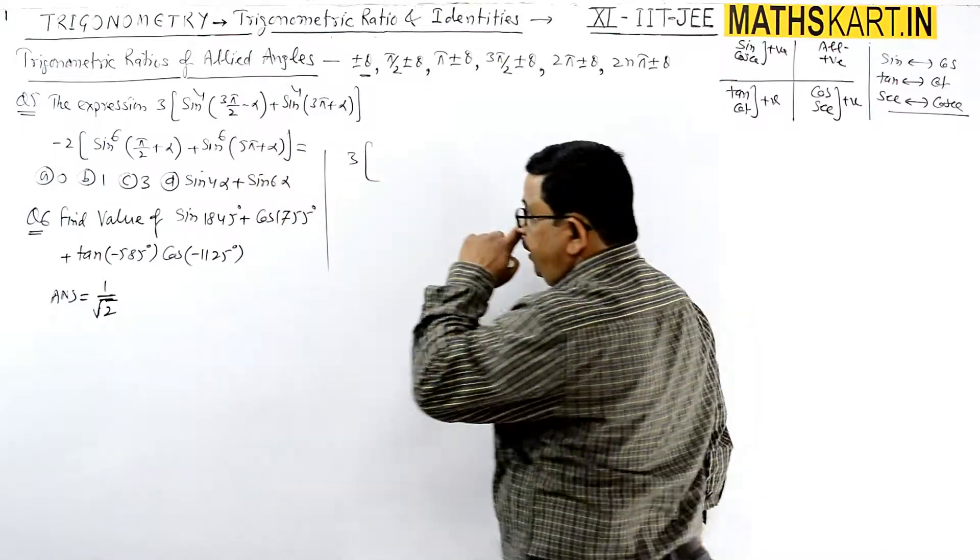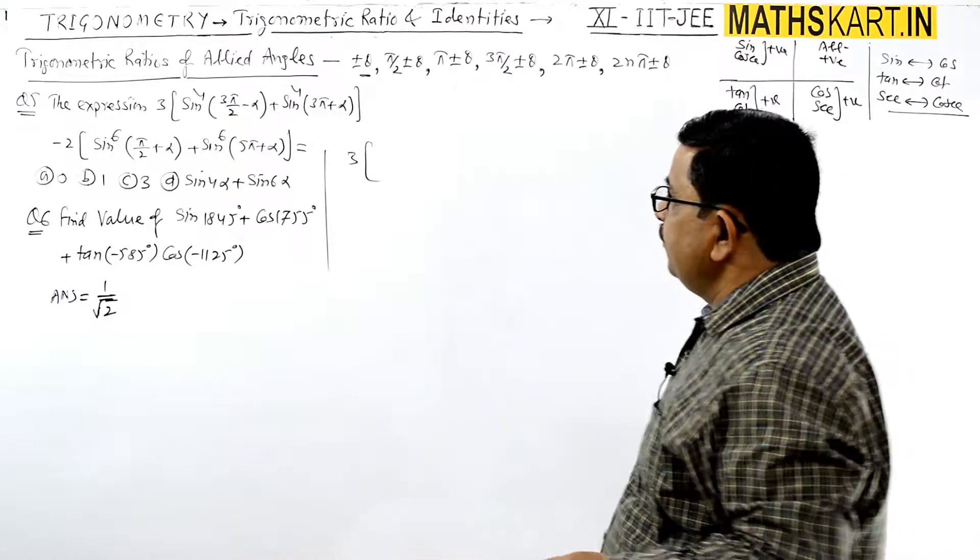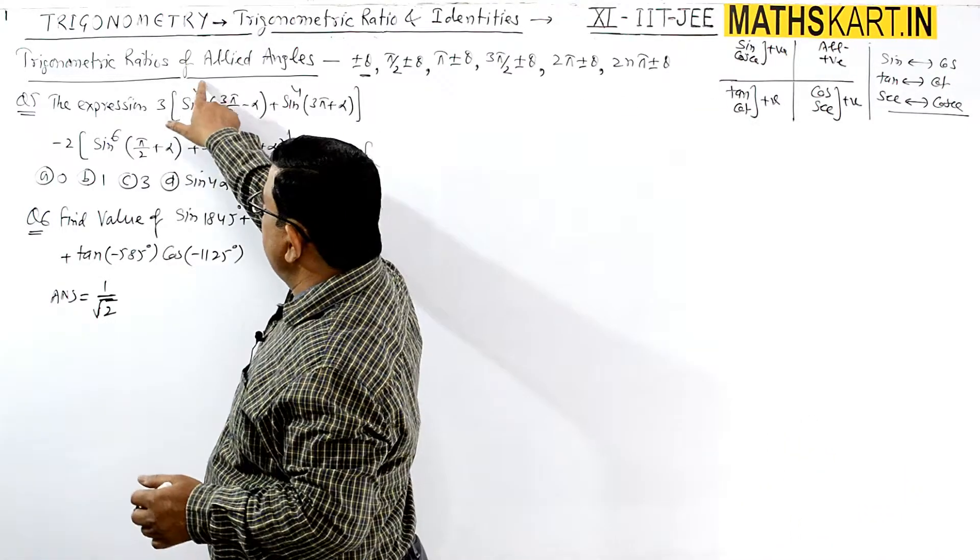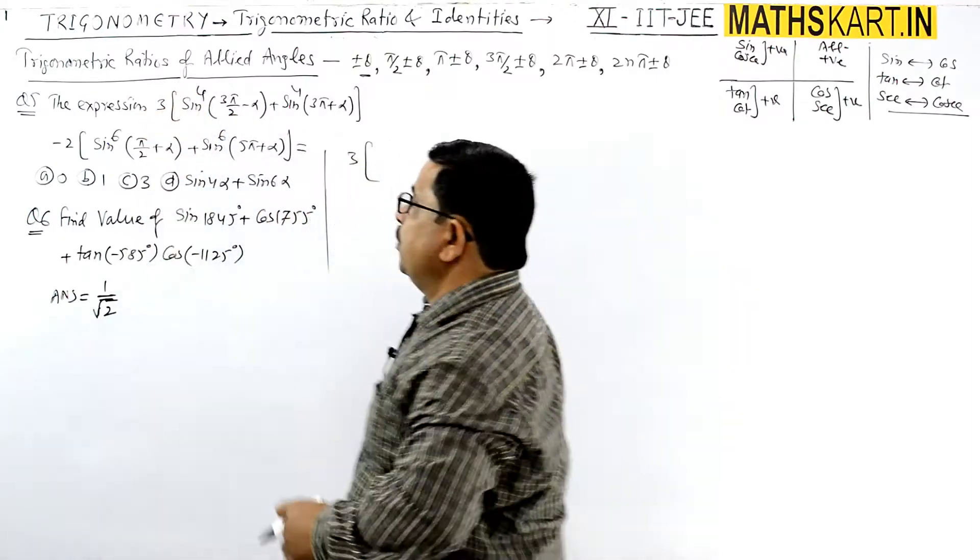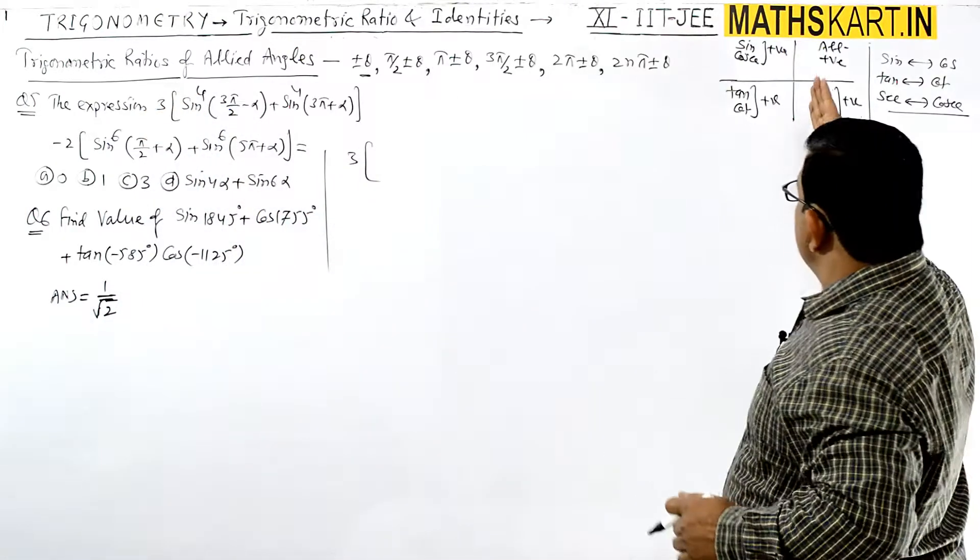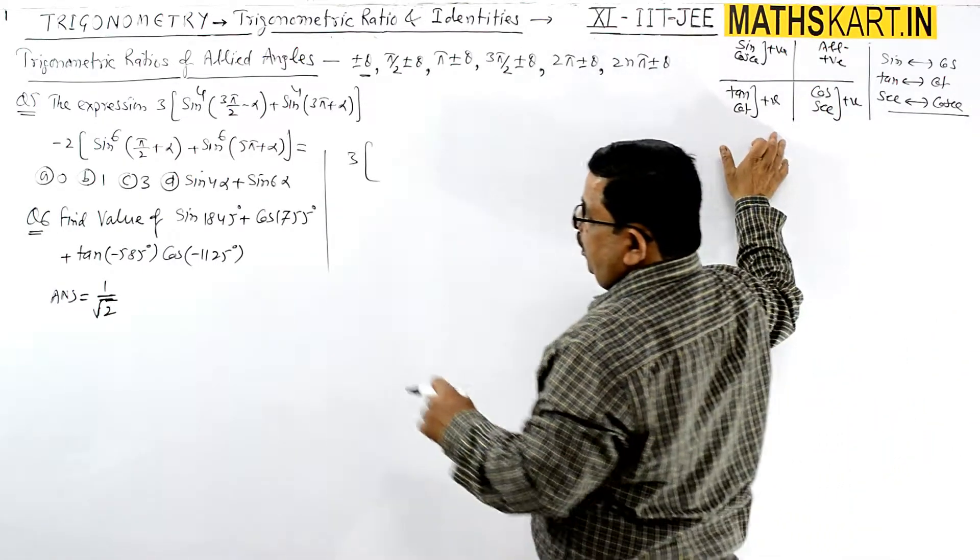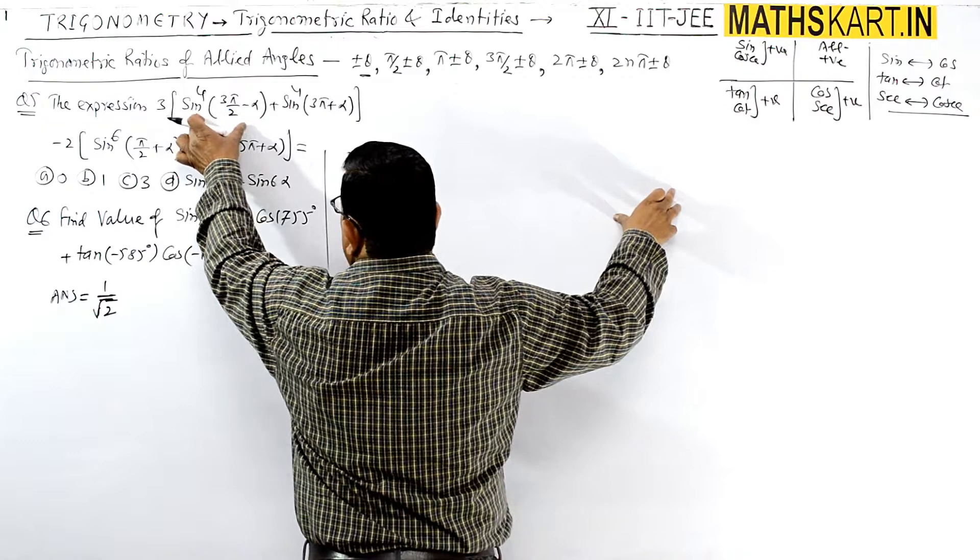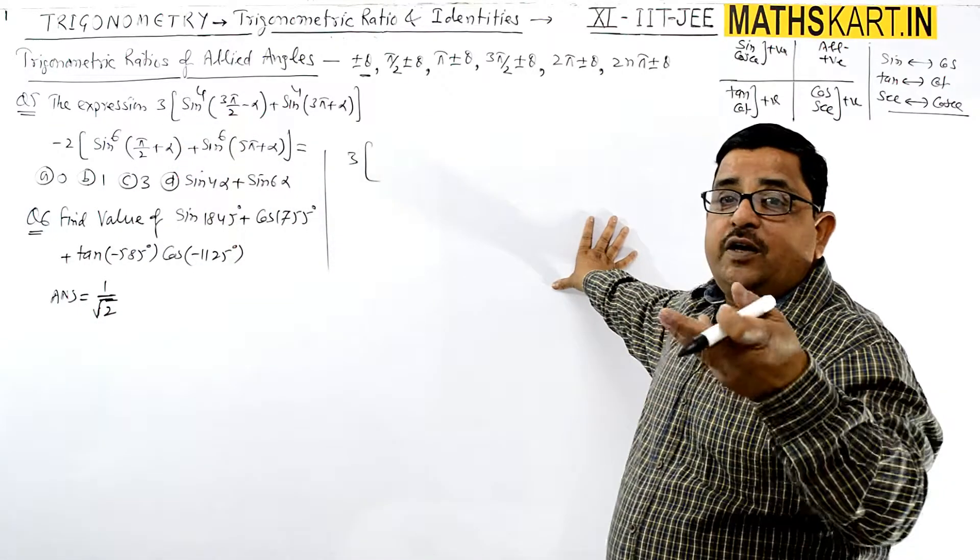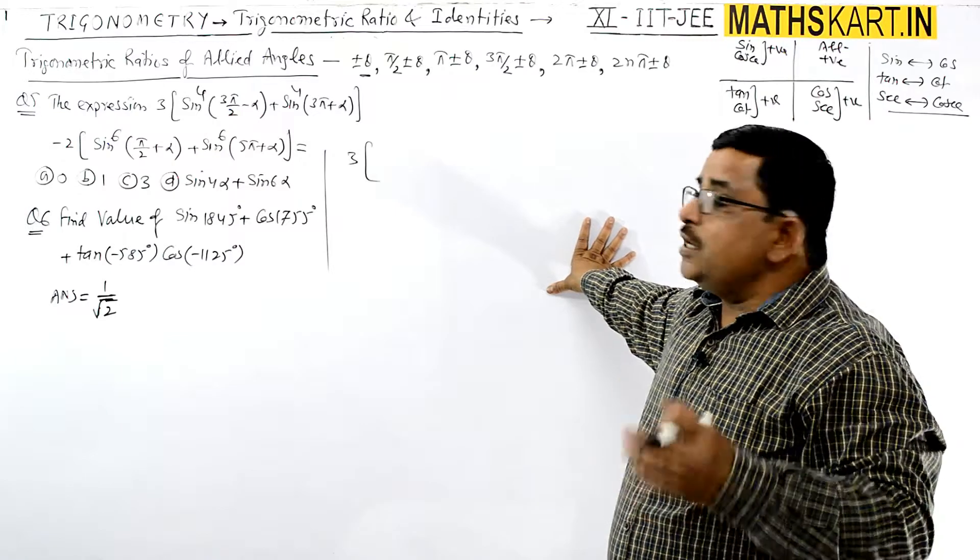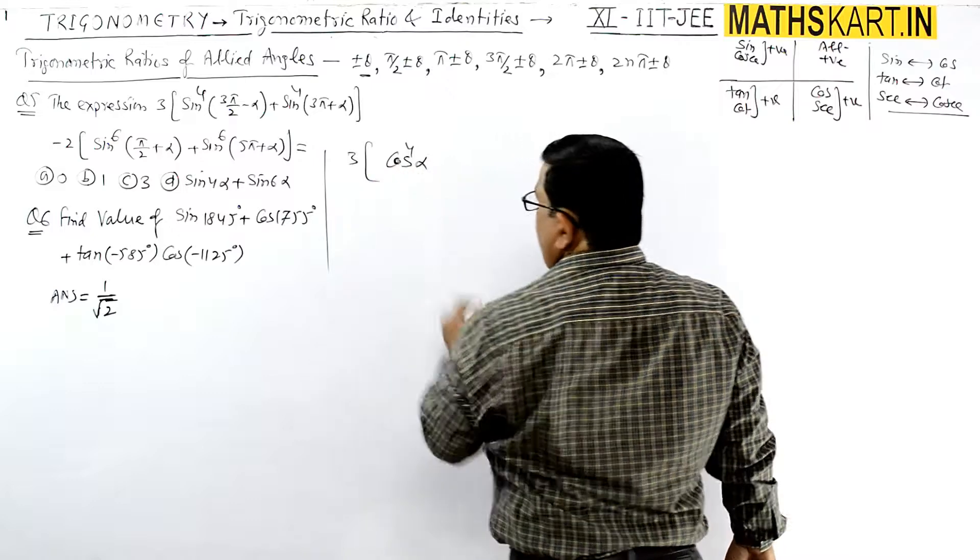First we have to write the value. If power 4 is there, then keep in mind that if negative value becomes positive. So if we do π/2 minus θ, sin converts to cos. So converting sin to cos, the sign changes to minus cos α. But even power is there, so it becomes positive, so you have to write cos^4 α.